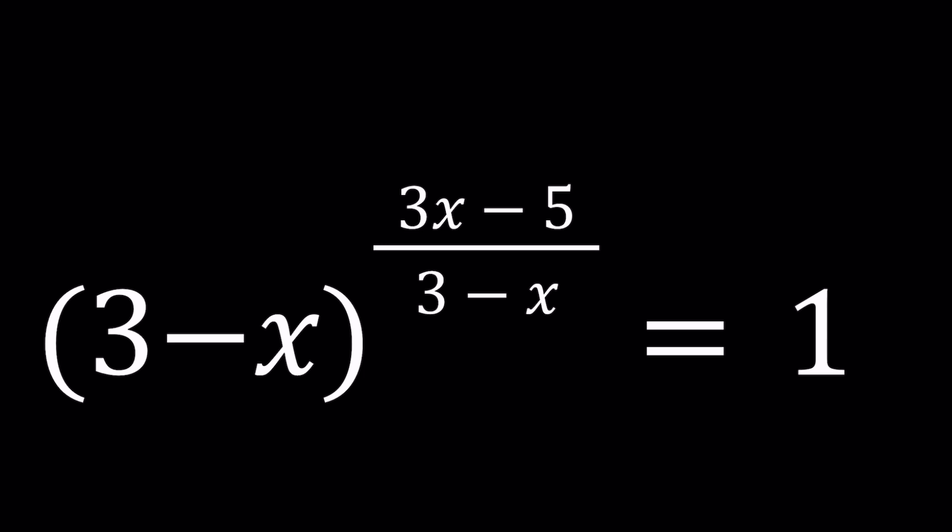So this is a pretty interesting exponential equation because we have 3 minus x in two places, which can be pretty interesting. And then second, we have a rational exponent. Great, so let's go ahead and take a look at an equation like this.